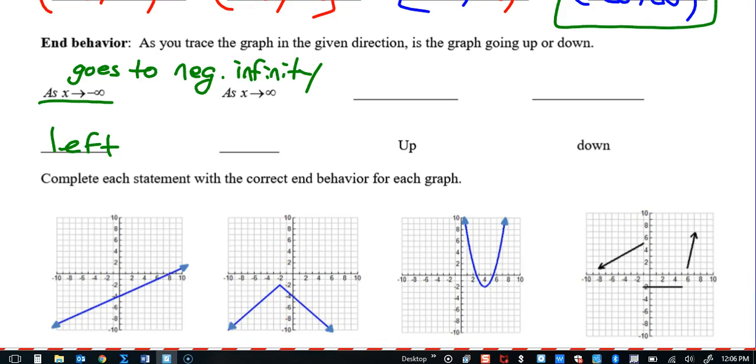I wrote these lines down here just to explain the direction. So as x moves towards negative infinity, that means you are tracing the graph to the left, as far as it'll go to the left. So what do you think as x goes to positive infinity? This is going to the right.